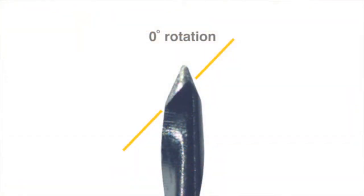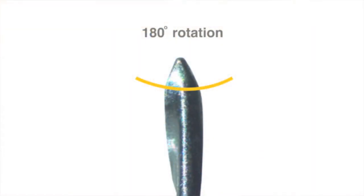The One Endo file addresses these problems in ways that contrast with conventional file designs. Unlike so-called safe tips that have to burnish their way into a canal that is smaller than the tip itself, the One Endo file has a flute that extends through its tip, providing a blade that cuts rather than burnishing its path. Opposite the blade side of the tip is a smooth rounded surface providing a pilot to guide the tip around curvatures.